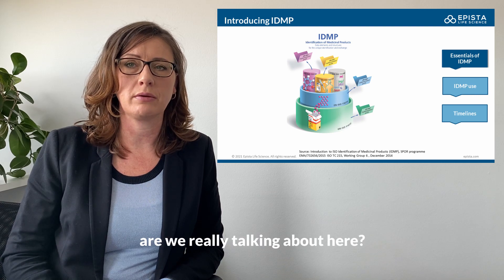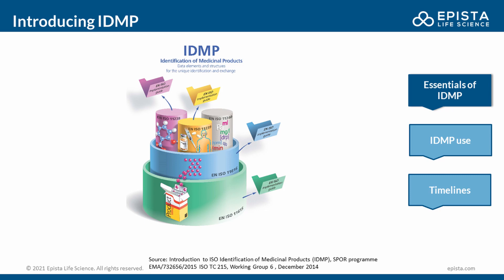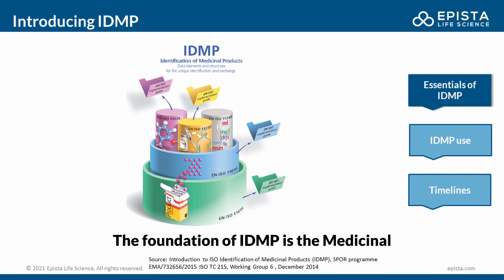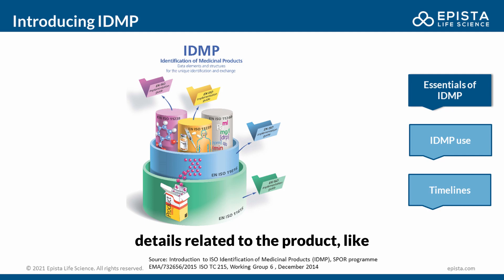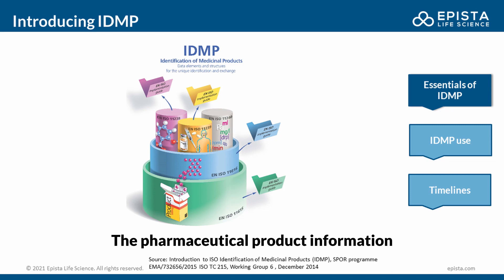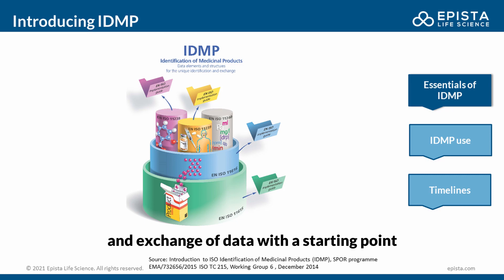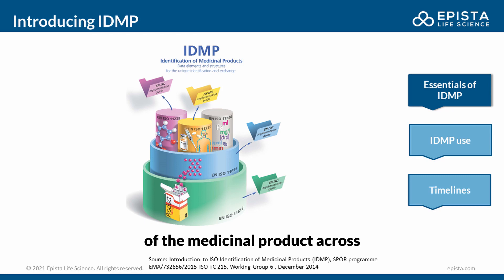So what are we really talking about here? Let's take a closer look at the figure. The foundation of IDMP is the medicinal product standard. It describes not only the content of a packed medicinal product from box to drug ingredients, but it also includes the registration details related to the product, like the approval date and registration number. The pharmaceutical product information standard allows for unique identification and exchange of data with starting point in the administrative product. This allows for tracking independently of the medicinal product across pharmaceutical products and across substances.